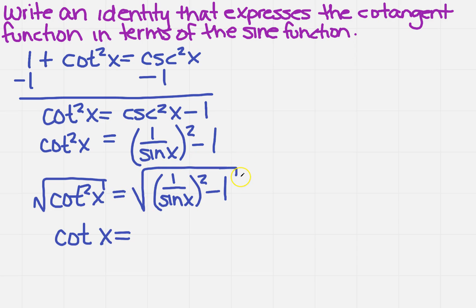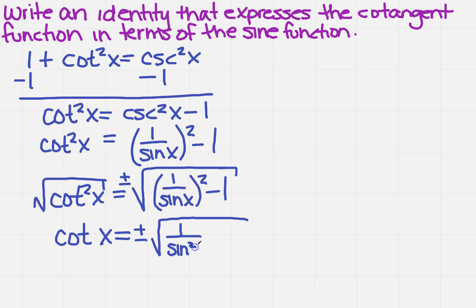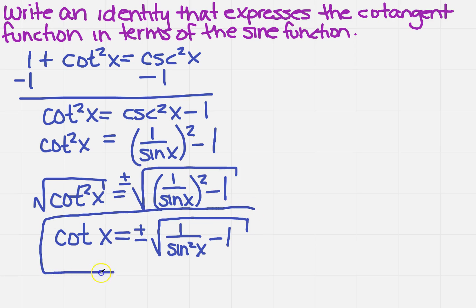Now, we did take the square root — what did I leave out? That's right, you have to take the plus and the minus. So we need plus or minus when simplifying under the radical. 1 squared is 1, so the expression becomes plus or minus the square root of 1 over sine squared x minus 1. The identity we have found is cotangent of x equals plus or minus the square root of 1 over sine squared x minus 1, and that's your final answer.